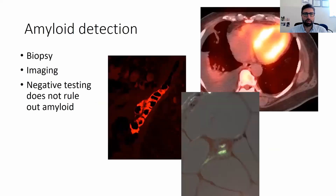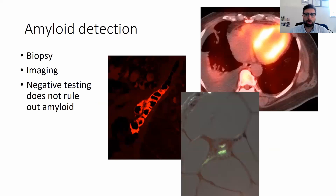How do we detect the amyloid? Biopsy is the classical method. You can biopsy the nerve, do a fat aspirate, or biopsy muscle and nerve together — both can be done with one incision. Other biopsy options include salivary glands, skin, rectal biopsy, GI endoscopy, or tissue from carpal tunnel release sent for Congo Red staining. Additionally, a PYP scan of the heart can demonstrate amyloid deposition. If the patient does not have a monoclonal gammopathy, a positive PYP scan can be considered diagnostic of amyloidosis without necessarily undergoing a biopsy.